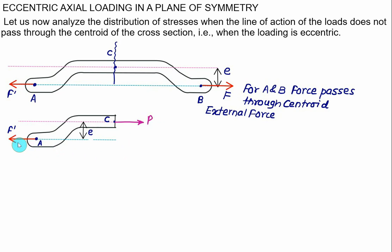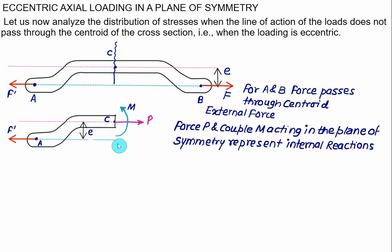Force F prime passing through point A makes a clockwise moment about point C. To balance that moment, we show the moment at point C in an anticlockwise direction so that the sum of moments equals zero. The force P and moment M represent the internal reactions in the plane of symmetry. We can find the values of P and M from the equilibrium equations.